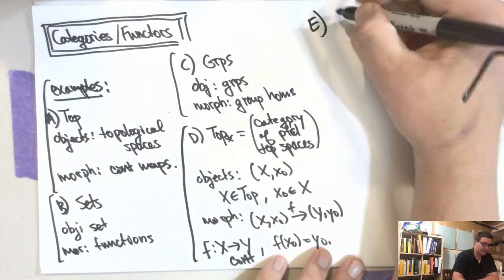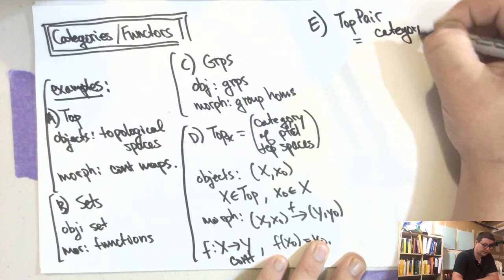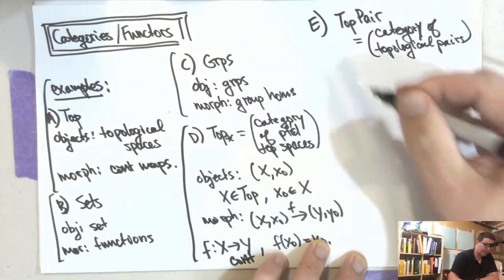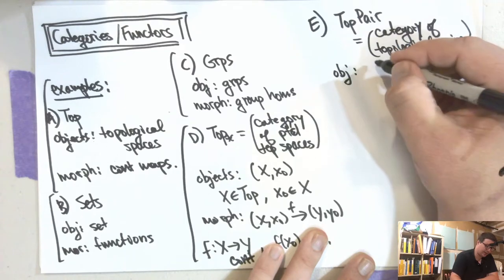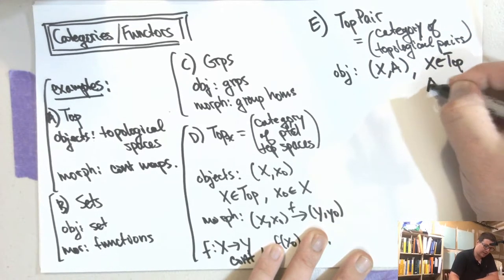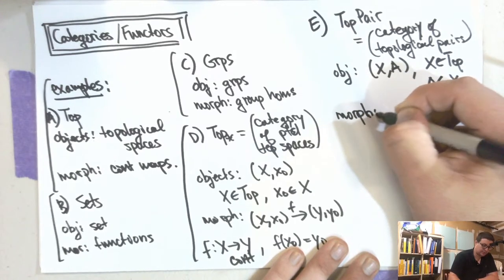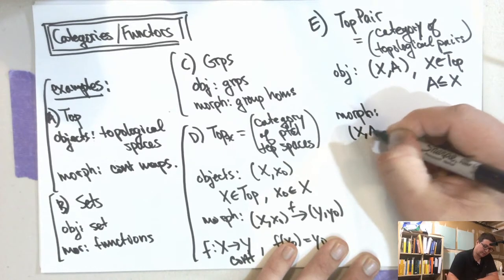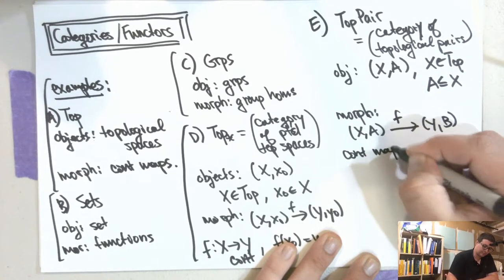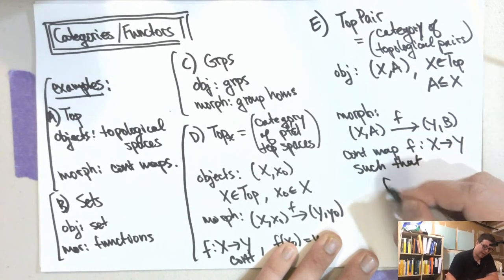Here's another category we'll need: Top-pair, the category of topological pairs. The objects are pairs (X, A) where X is a topological space and A is a subspace of X given the subspace topology. A morphism from (X, A) to (Y, B) is a continuous map f: X → Y such that f(A) ⊆ B.